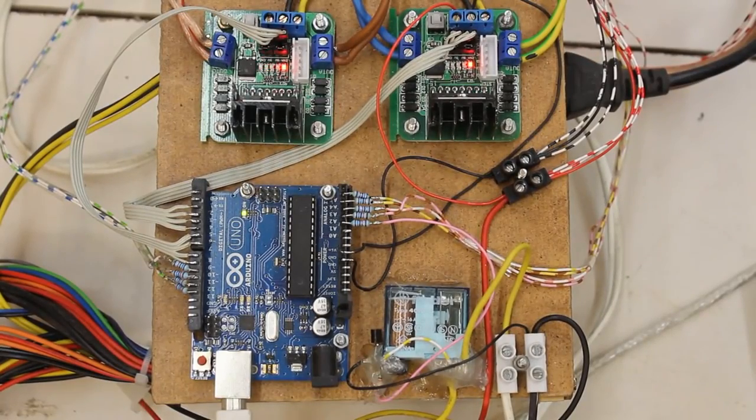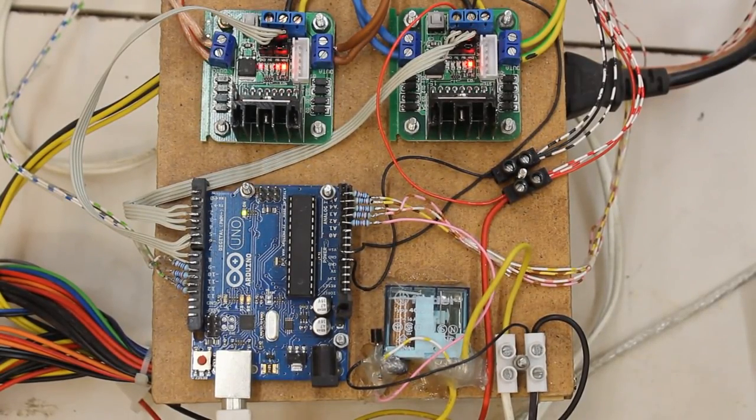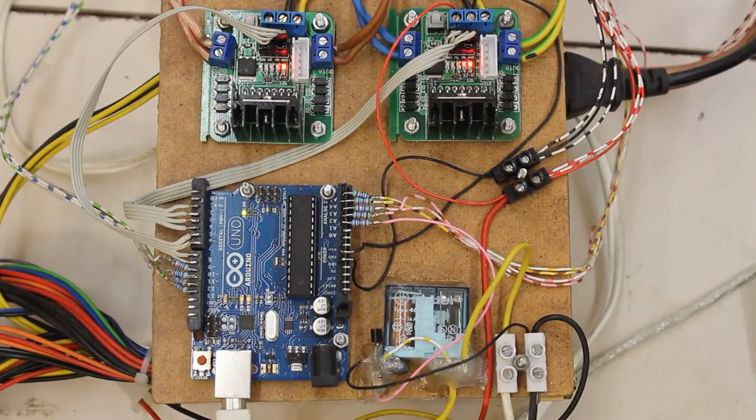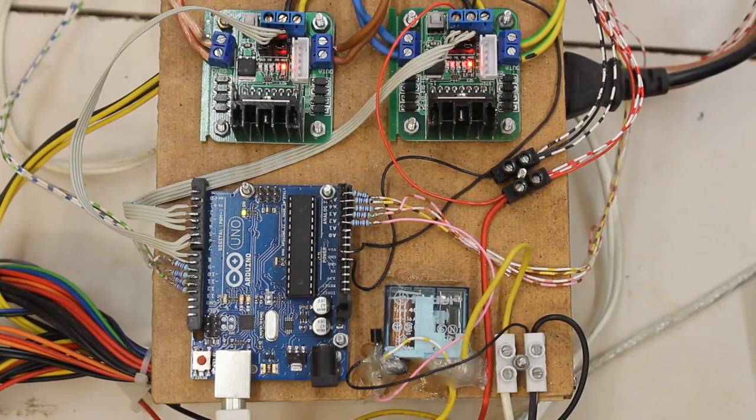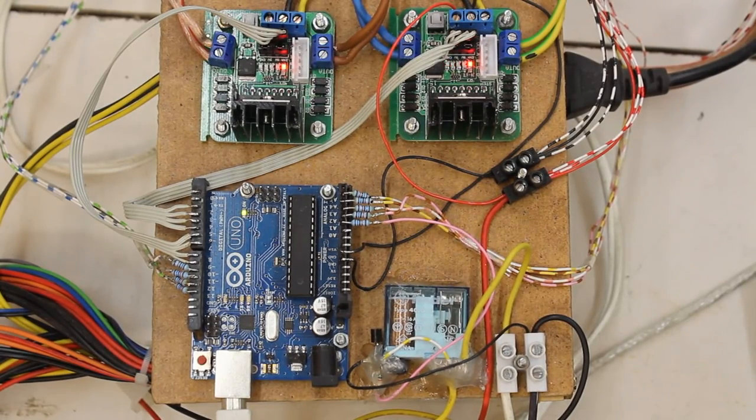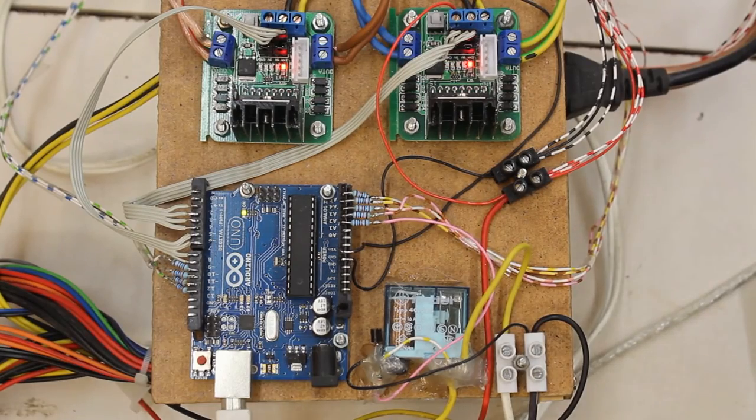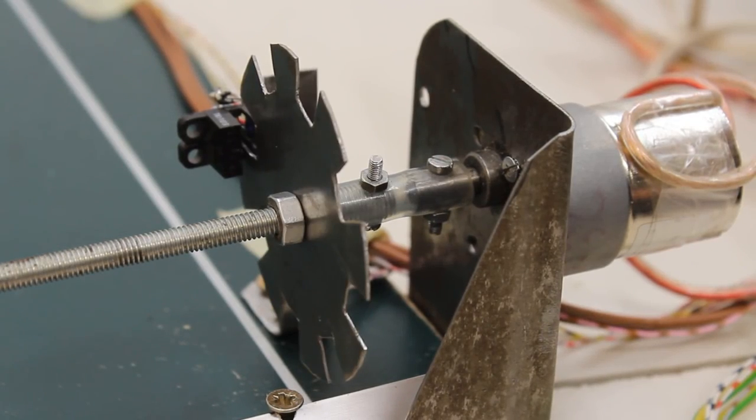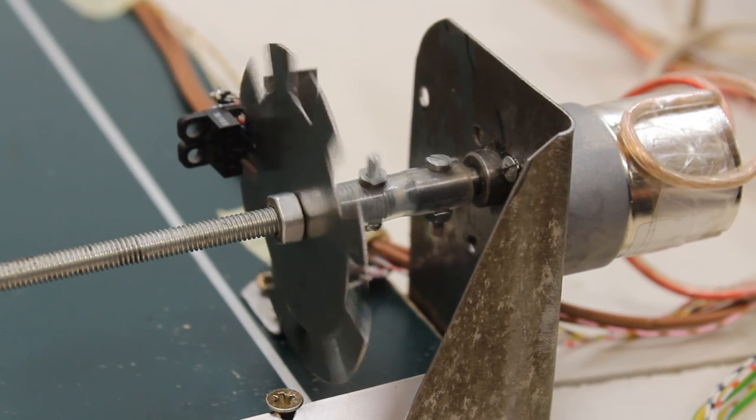The motors are controlled through 4 H-bridges, each of the two boards used here has two bridges. The control pulses are generated by an Arduino Uno, which computes the current position of the motors via the 8 photosensors. I have demonstrated that principle in detail in my video about the Arduino Uno microcontroller.